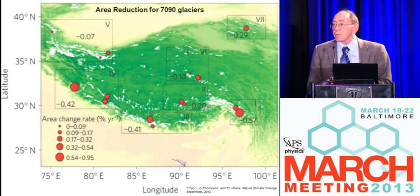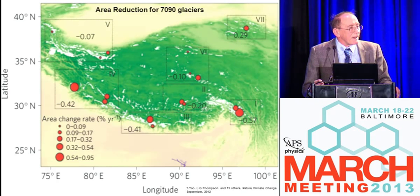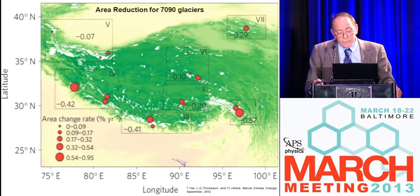Working with the Institute of Tibetan Plateau in Beijing, China, we have looked at 7,090 of those 46,000 glaciers from satellite images from 1970 to the present. This shows the percent of ice loss per year — the bigger the dot, the greater the loss of ice. You can see it's not uniform across the plateau; we're losing more ice in the south along the Himalayas than in other parts of that region.